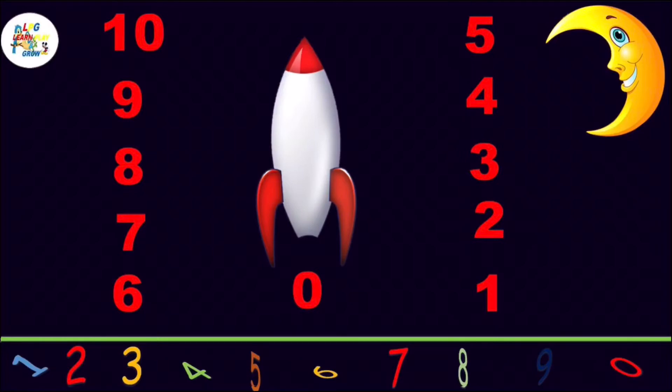Let's learn backward counting: ten, nine, eight, seven, six, five, four, three, two, one, zero. Once again, ten, nine, eight, seven, six, five, four, three, two, one, zero.